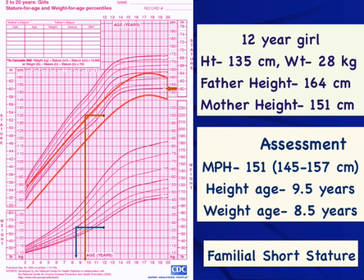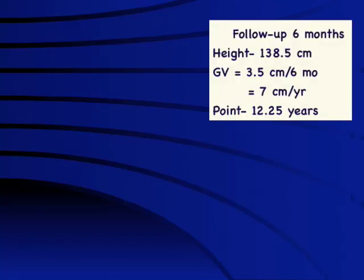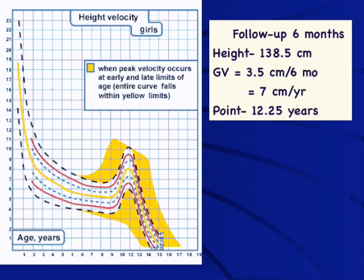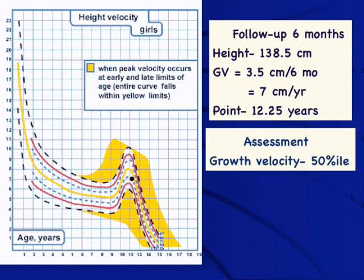For nutrition to be a predominant driving force for growth failure, one would expect a difference of at least two years between height age and weight age. So we just follow up. On follow-up after six months, this child gained 3.5 centimeters, which is 7 centimeters per year — absolutely normal. On the growth velocity chart, using the midpoint of 12 and 12.5 years (i.e., 12.25 years), the dot falls at the 50th percentile line. So this child is short for the population, normal for the family, and growing normally — a classical case of familial short stature.